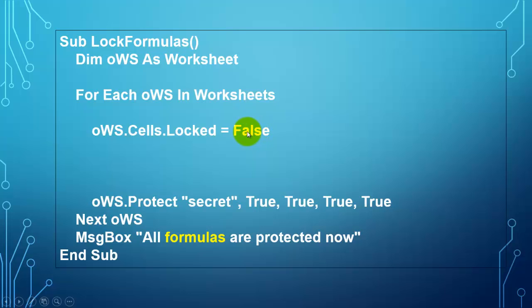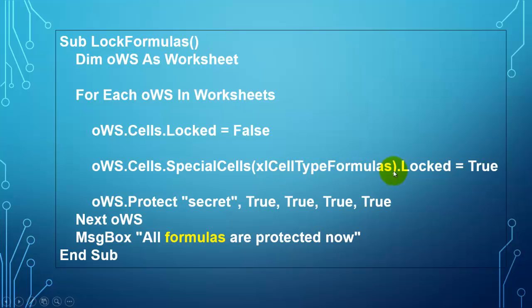That means when you turn protection on, all cells are locked. But we turn that off and we talk only to the cells of a special type that have formulas in it and that we set locked back to true. So the others will not be locked. In case there are no formulas on a certain sheet, we get into an error. So we have to say on error resume next. So it will just skip this line if there is an error.